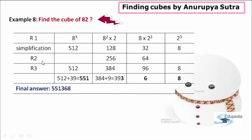After completion of the second row, moving to the third row — here we add up all the answers from the first row and the second row. In the fourth part, we have only the answer 8 from the first row and no answer in the second row, so we write 8 as it is. In the third part, 32 plus 64 gives 96. In the second part, 128 plus 256 gives 384. In the first part, we have 512 from the first row and no answer in the second row, so we write 512 as it is.